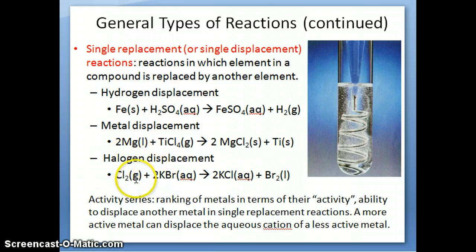We can also see displacement of halogen by another halogen. Remember halogens are these group 7 elements. So chlorine gas can react with potassium bromide. And the chlorine gas will displace the bromide ion that was originally here. So then the product you get is potassium chloride and bromine liquid.